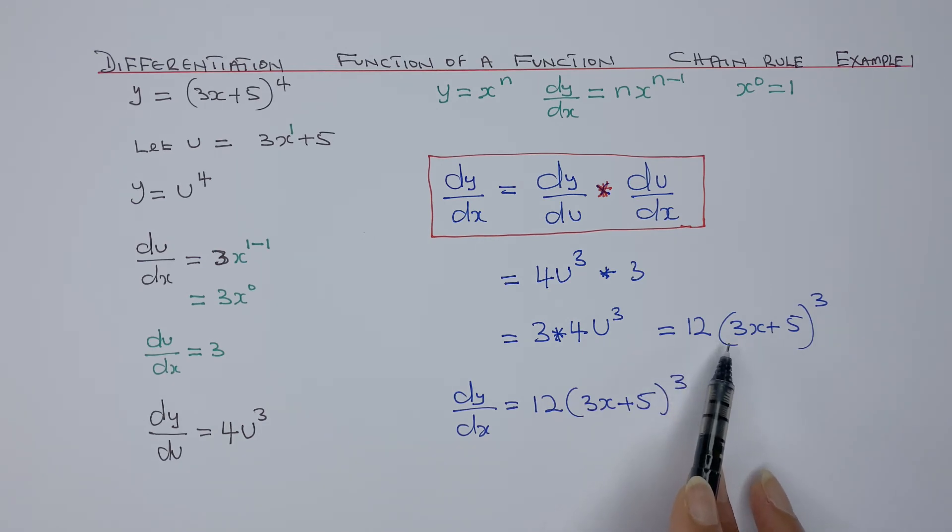So that's how I've got my 3 times 4. 3 times 4 is 12, then 3x plus 5 to power 3.